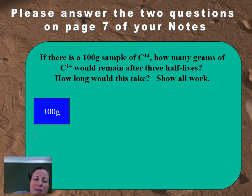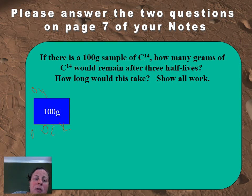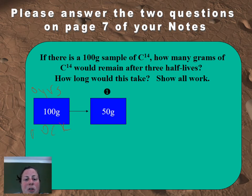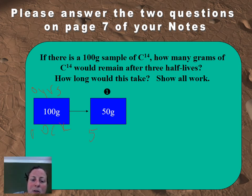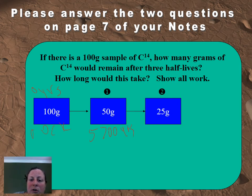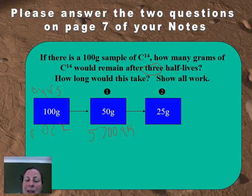This could be a rock or a fossil — it doesn't really matter. You have 100 grams in the original sample, and this would be when it is zero years old — it was just formed. After one half-life, we lose half of that carbon-14, so now it's 50 grams left of carbon-14. At one half-life it would be 5,700 years old. On the next half-life — we need to do three — we lose half again, so we have 25 grams left of carbon-14. That's gone through two half-lives, so you multiply 5,700 by two and now it's 11,400 years old.